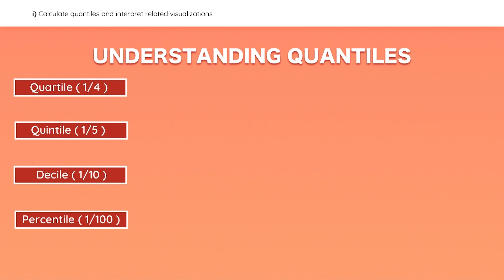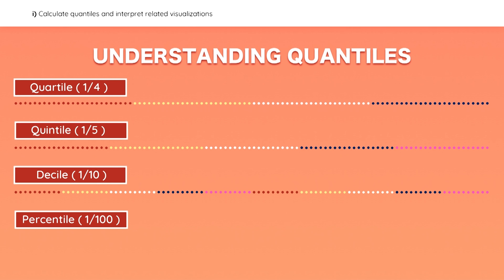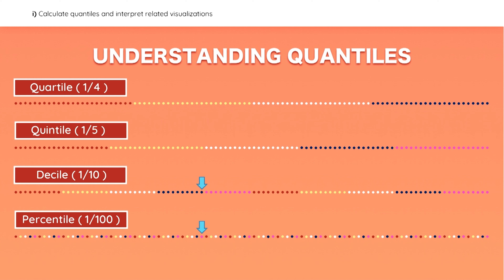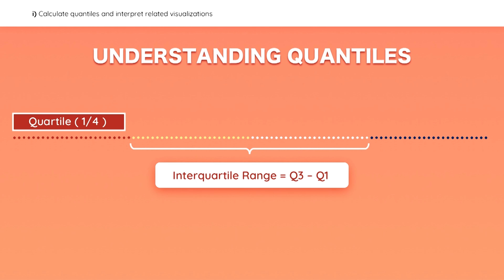For this next learning outcome, you should know how to divide data into quantiles. Quartiles divide the data into quarters, quintiles divide it into fifths, deciles into tenths, and percentiles into hundredths. Notice how the 40th percentile is the same as the fourth decile or second quintile because 40% equals four-tenths or two-fifths. The interquartile range is equal to the difference between the third quartile and the first quartile.